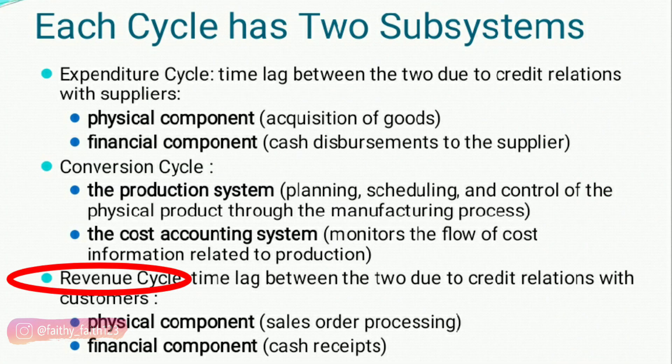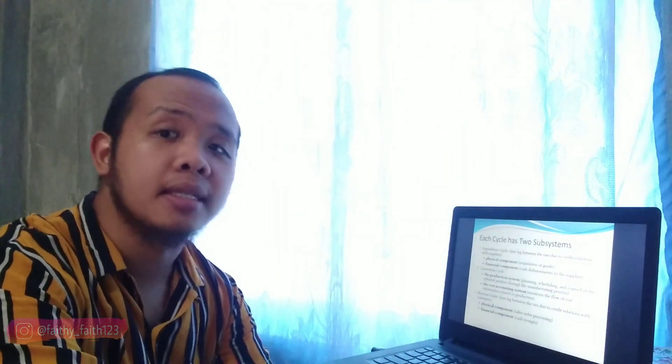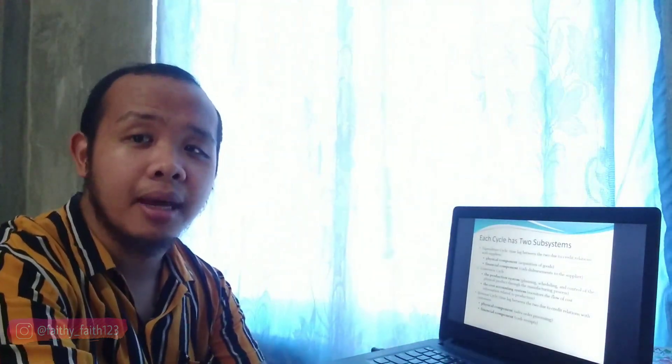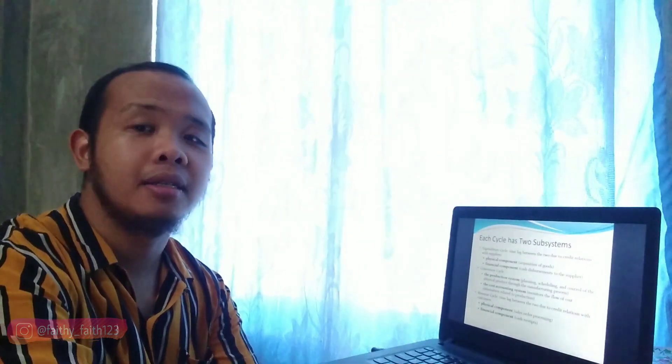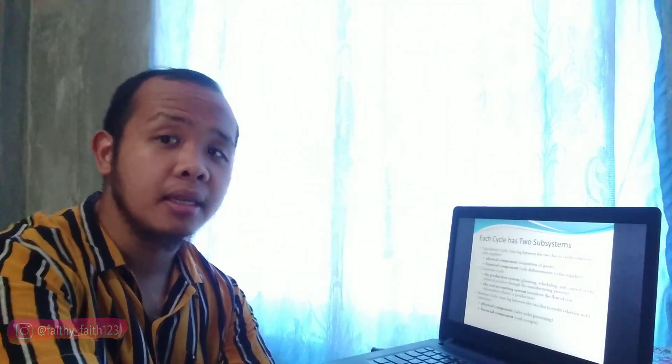The revenue cycle is the same as expenditure — physical and financial. There is a time lag also because not all sales are on cash; they are on credit, such as accounts receivable. So not all sales are converted into cash immediately.